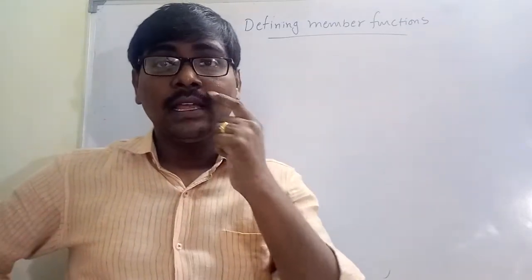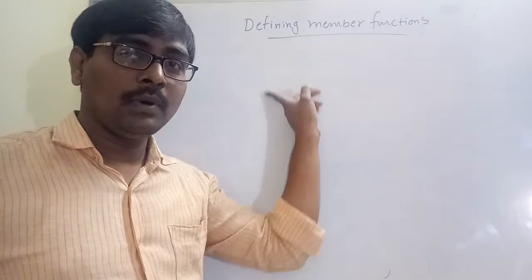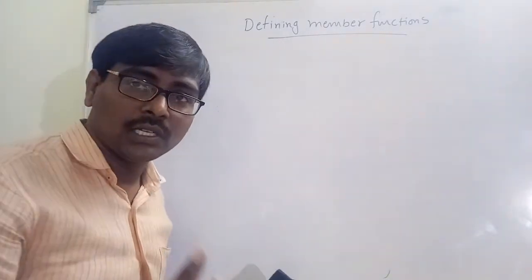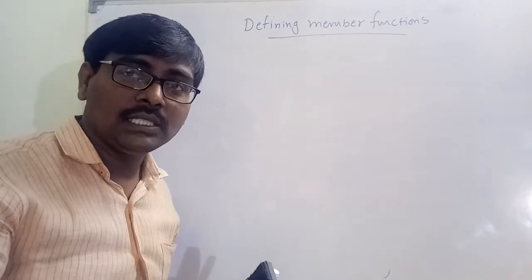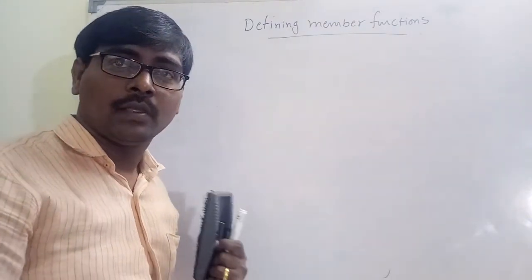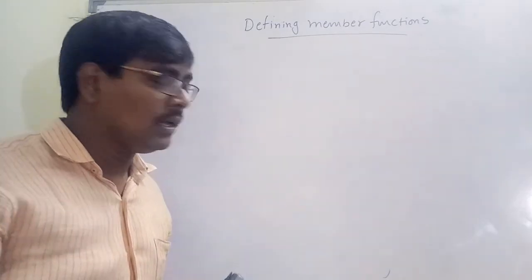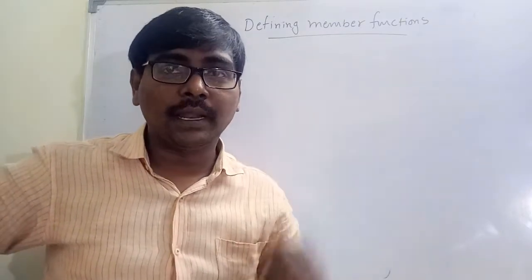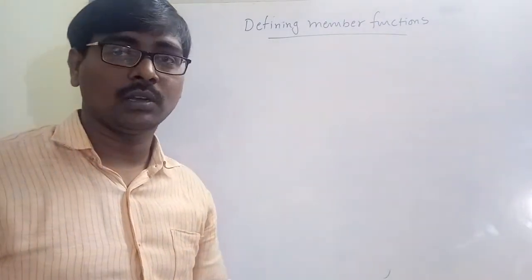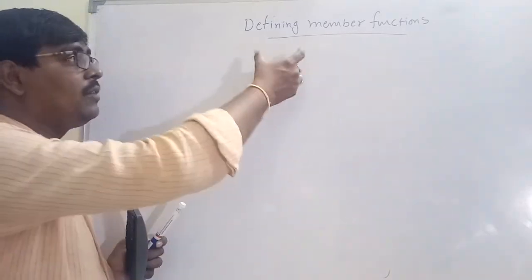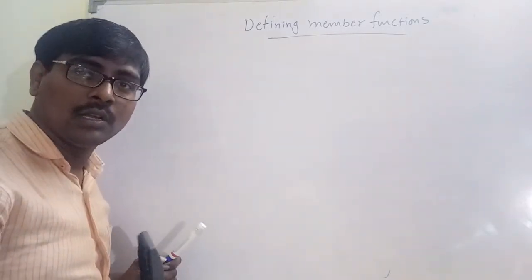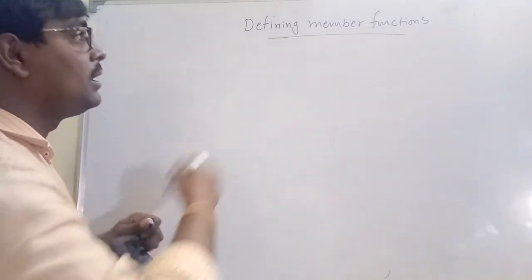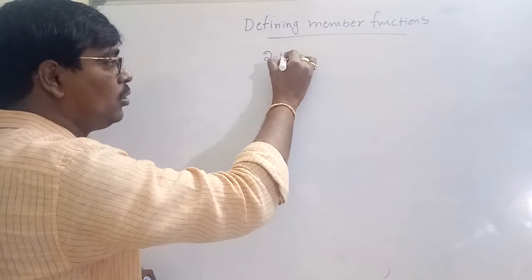What is a class? A class is a collection of data members and member functions. Simply, the member functions are the functions that operate on the data members. Consider the previous example — 'read' is the member function which operates on the data members: quantity, price, and ID. Defining the member function means we are providing some definition or body to the function.